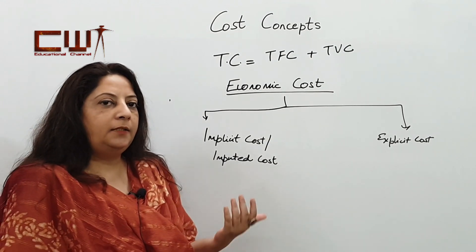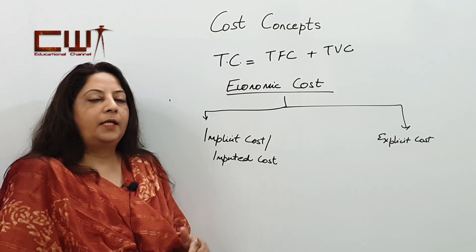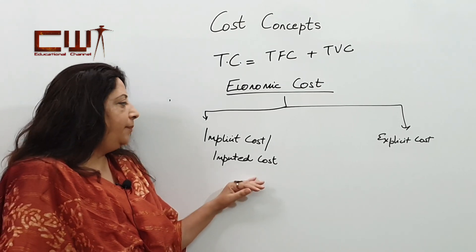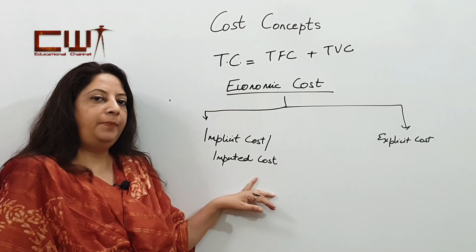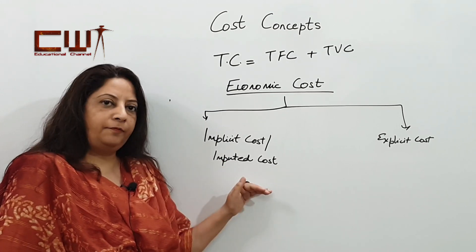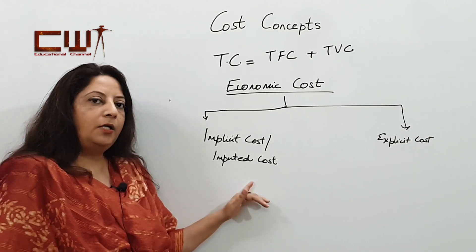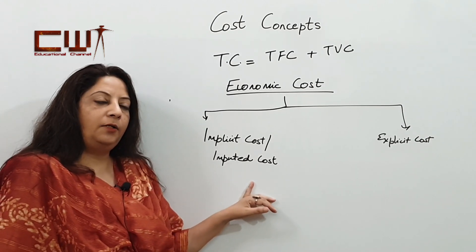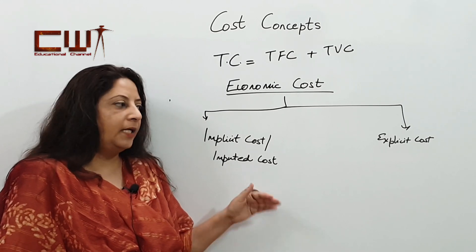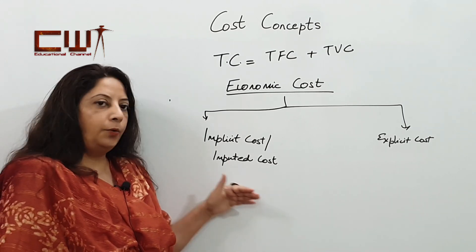Suppose a businessman is doing business from his own home. He is not paying rent to anyone outside the business. So that becomes an implicit cost for the entrepreneur. Implicit cost is the cost which is not paid to any factor of production outside the business, but it is the implied cost of the owner himself.